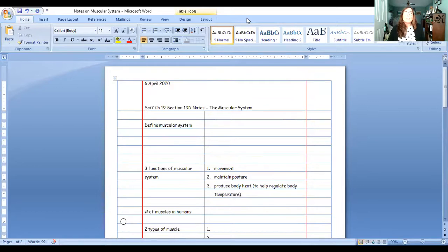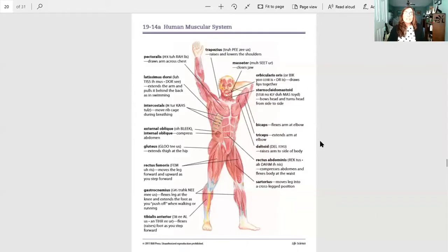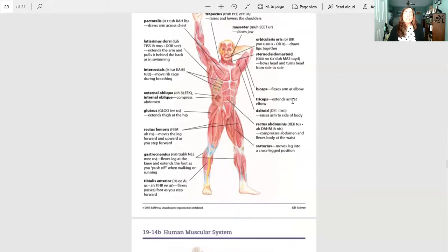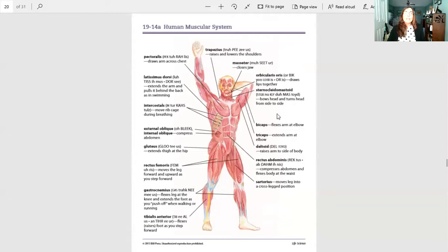And when you do, you will see something that looks like this. And this is a description of the names of the major muscles in the human muscular system and what each muscle does.